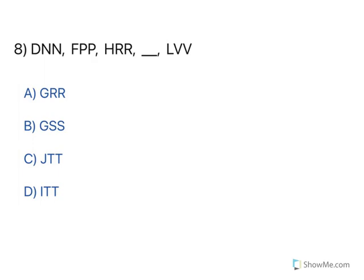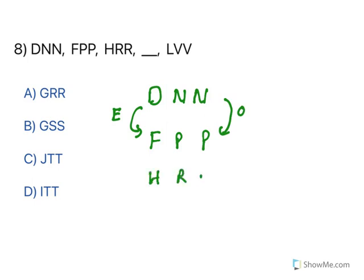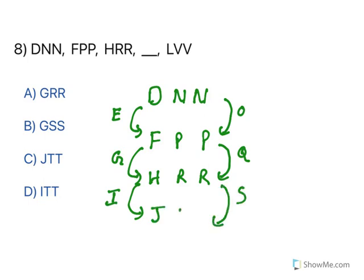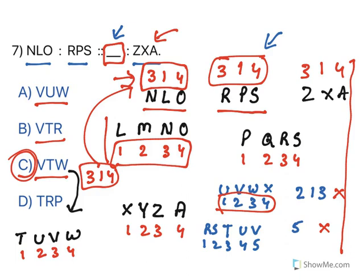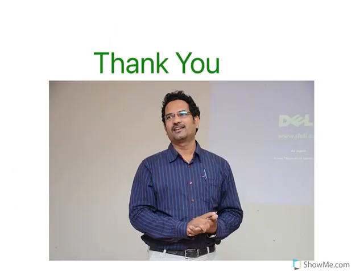Now the last one. We need to understand the pattern: D, N, N and then F, P, P. After D, E is missing and it jumps to F. After N, O is missing and it jumps to P. Next: H, R, R — after F, G is missing and it jumps to H. After P, Q is missing and it jumps to R. So what should be the next pair? After H, I is missing so it becomes J. After R, S is missing so it becomes T. The answer is J, T, T. All these are alphabetical patterns — very easy when you find what pattern is being followed. Hope this is useful, thank you for watching.